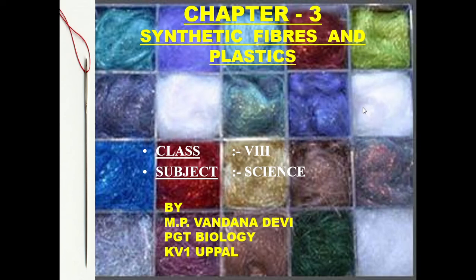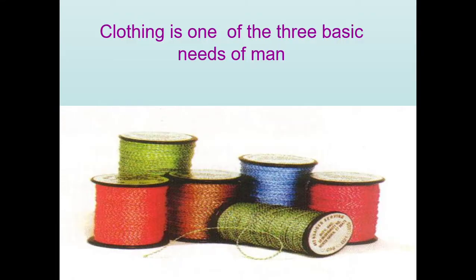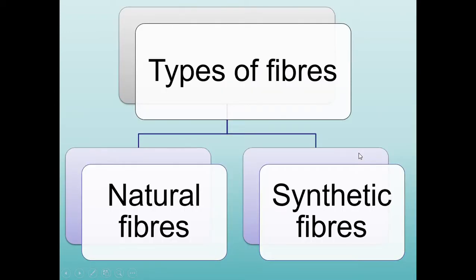Welcome children to today's science class. Today we will be covering the chapter Synthetic Fibers and Plastics. Clothing is one of the three basic needs of man — food, clothing, and shelter — and your clothes are made up of fibers.